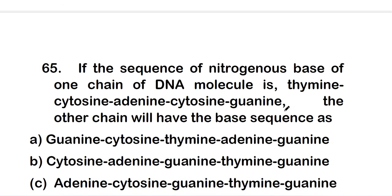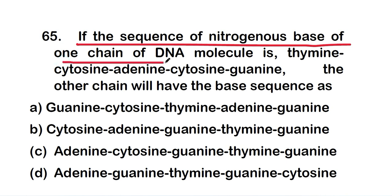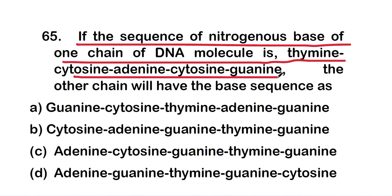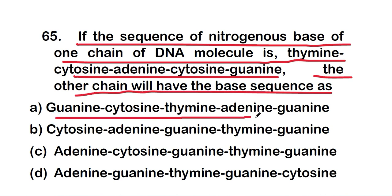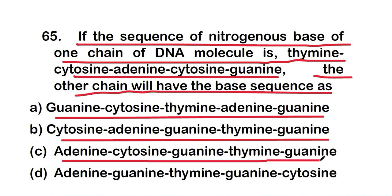Question 65: if the sequence of nitrogenous bases of one chain of a DNA molecule is thymine, cytosine, adenine, cytosine, guanine, the other chain will have the base sequence as: option A, guanine, cytosine, thymine, adenine, guanine; option B, cytosine, adenine, guanine, thymine, guanine; or option C, adenine, cytosine, guanine, thymine, guanine...